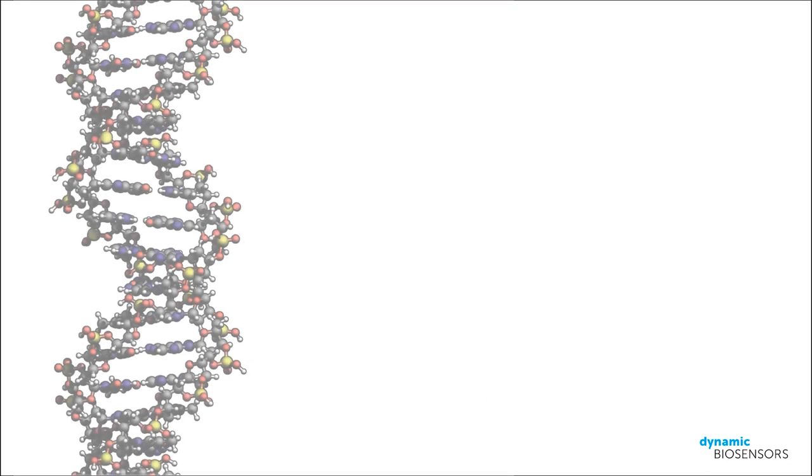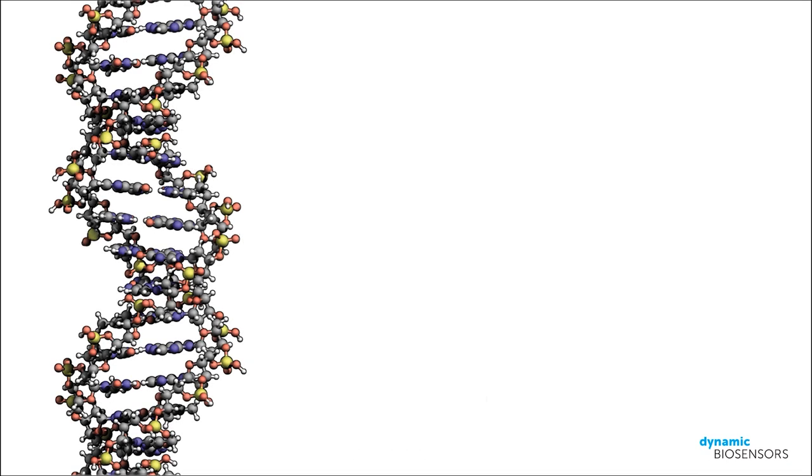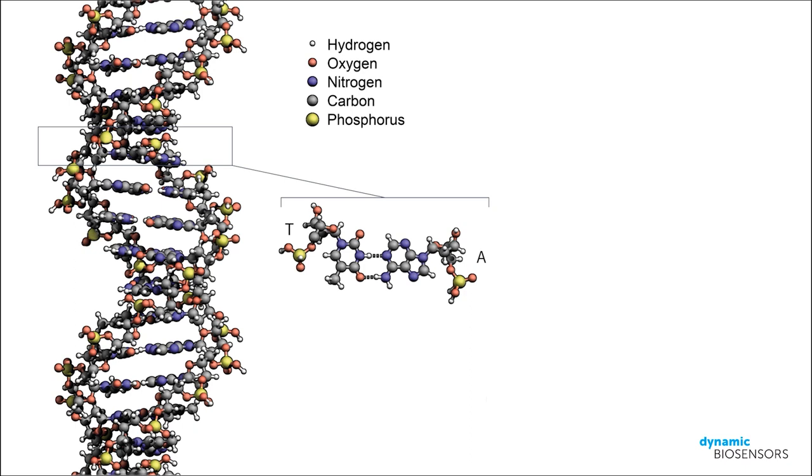Let's use the example of DNA-DNA interactions, because besides being the basis for life as we know it, DNA is also a very nice model system to exemplify how molecular interactions work. On the left, we see the well-known molecular structure of DNA. Two strands form a double helix which is held together by complementary base pairs. The genetic code is defined by the sequence of the bases A, T, C and G.